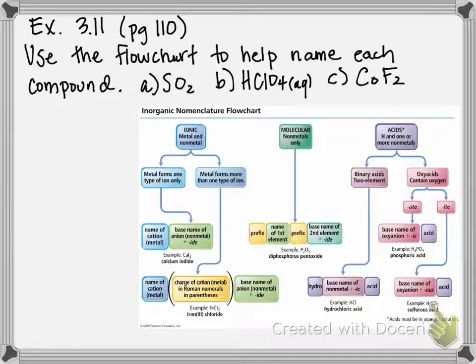This is example 3.11 on page 110 of our textbooks. Here we're going to put all the knowledge that we've learned about naming and utilize this flow chart that we've been given to help us name a mixture of compounds.